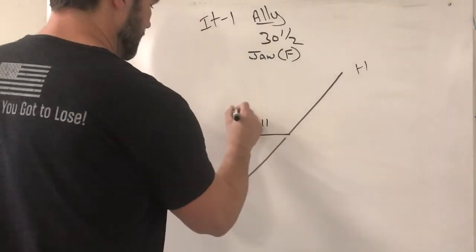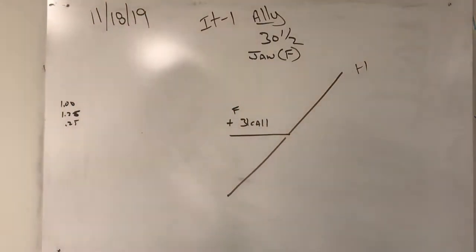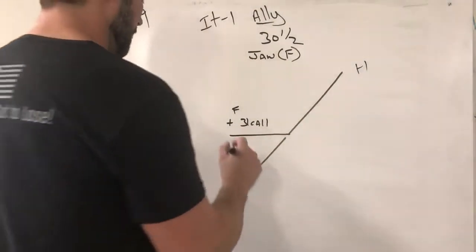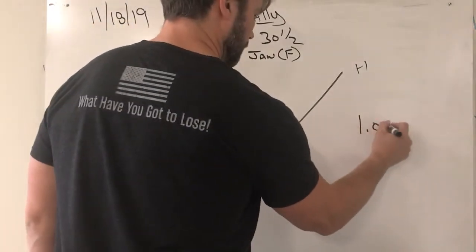I'm gonna buy that and that is in January as symbol as F. This is a graph of the 31 call. That's gonna cost us one dollar.